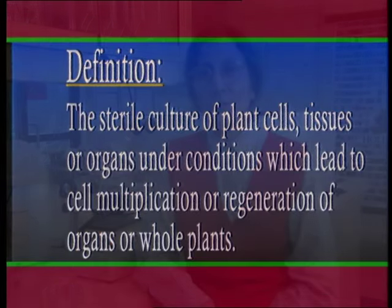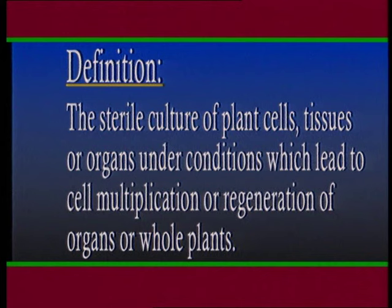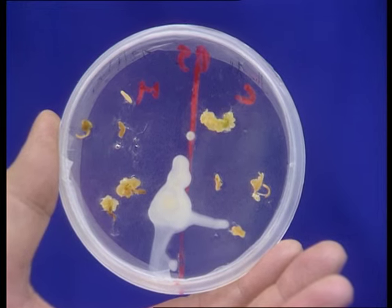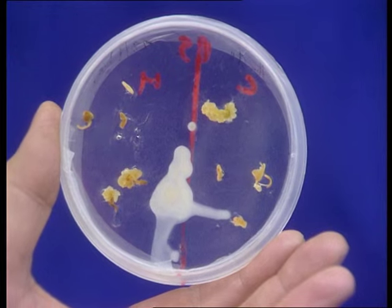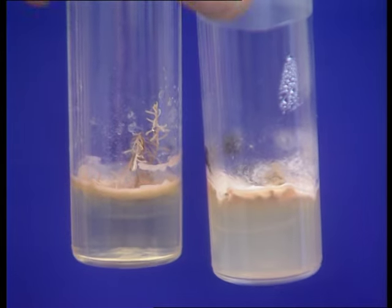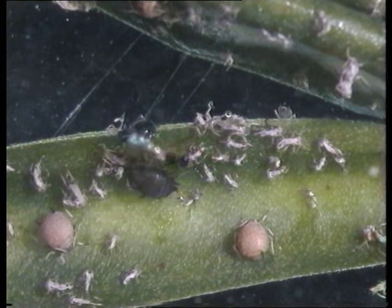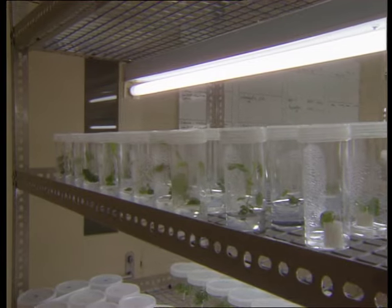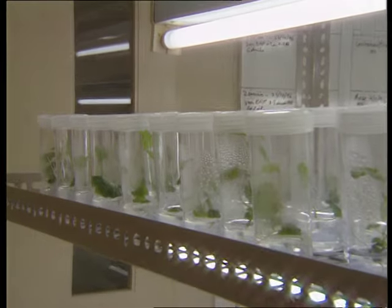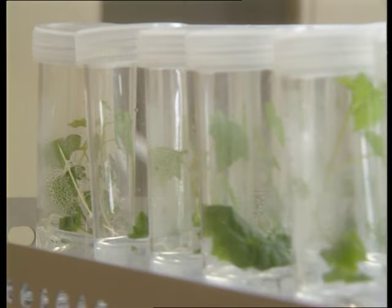Let us look at the definition of plant tissue culture, also known as in vitro culture. It is the sterile culture of plant cells, tissues or organs and the conditions which lead to cell multiplication or regeneration of organs or whole plants. All microorganisms such as fungi, bacteria and viruses, as well as other pests — insects and nematodes — are excluded.